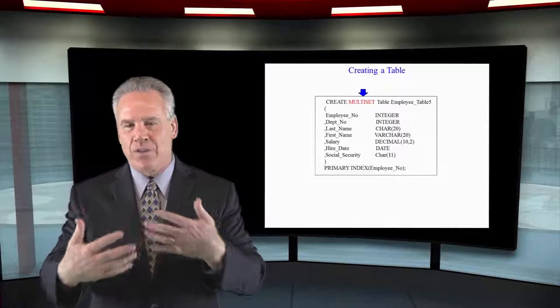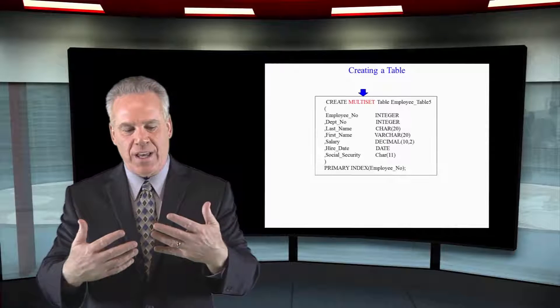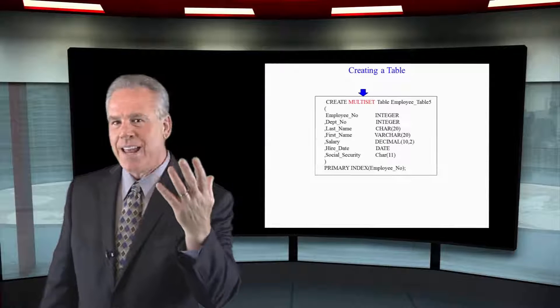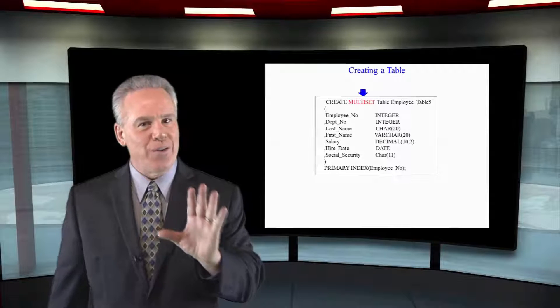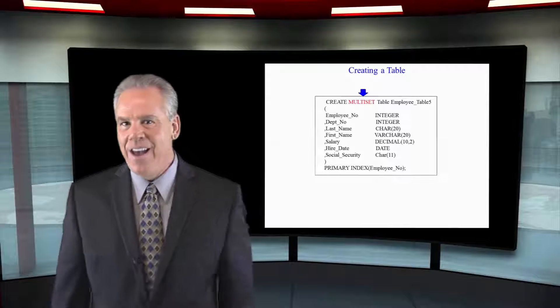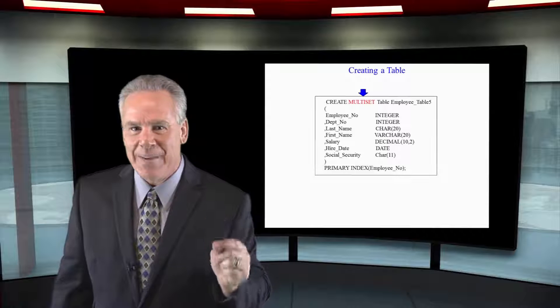Let's look at set versus multi-set. The great thing about a set table is you can't get duplicate rows. If someone tries to do the same ETL load twice with the same data, it kicks it out and says you almost made a mistake there. But it has to do a duplicate row check quite often, and this can slow things down on any type of insert, update, or delete in a set table.